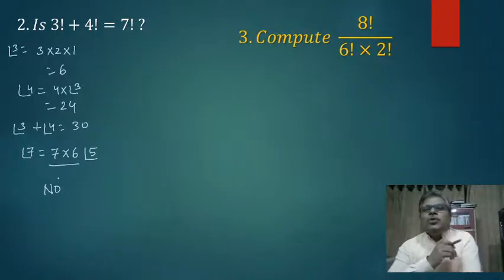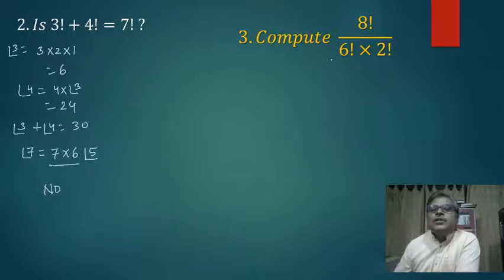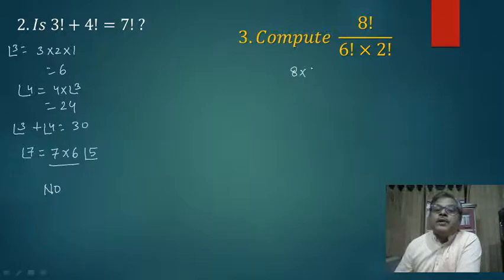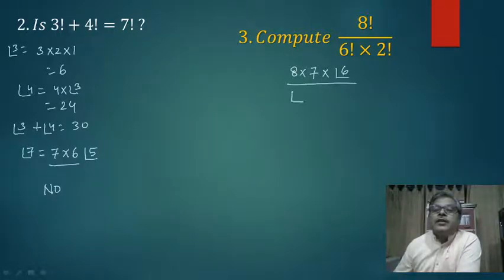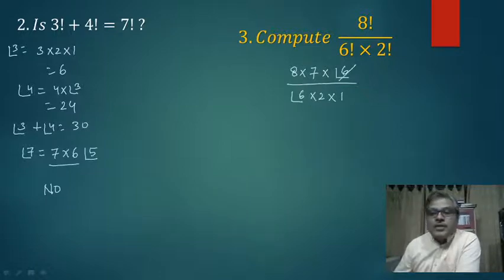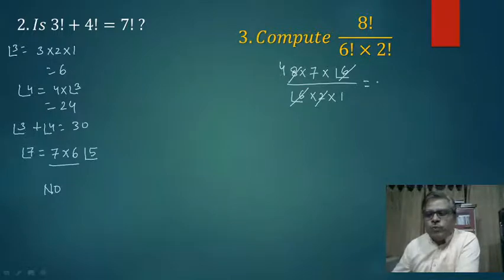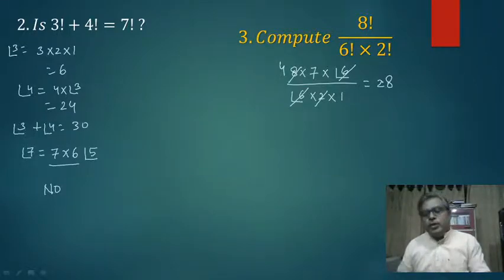Calculations में ध्यान रखना है: जैसे factorial 8 को numerator में लिखा और denominator में factorial 6 है, तो 8 × 7 × factorial 6 लिखेंगे और factorial 6 cancel करेंगे। Factorial 2 = 2 × 1, तो 6 cancel करने पर 7 × 4 = 28 हमारा answer हो जाएगा। Questions are simple — कोई दिक्कत नहीं आएगी।